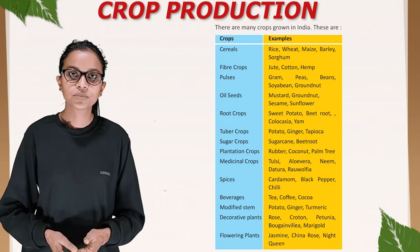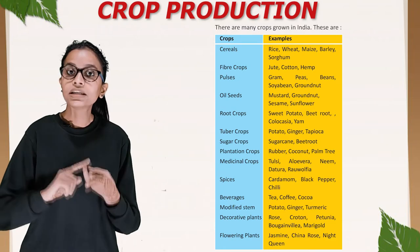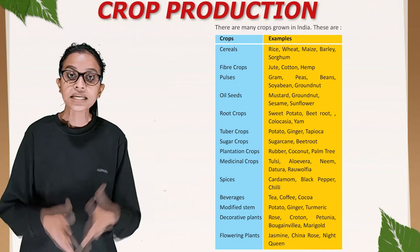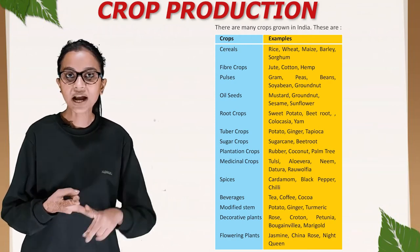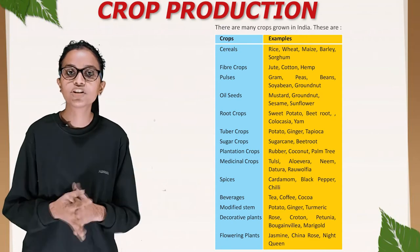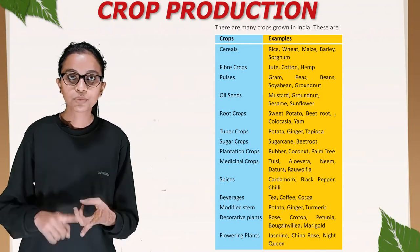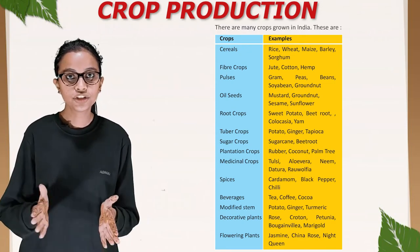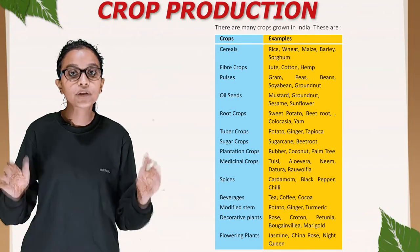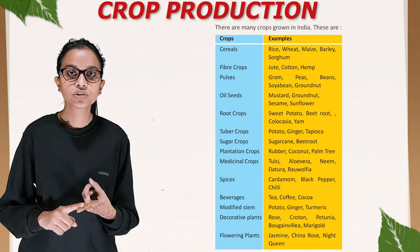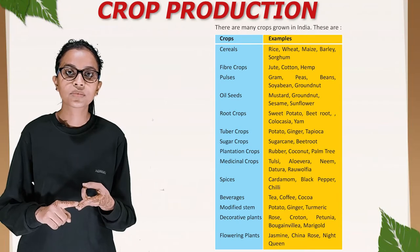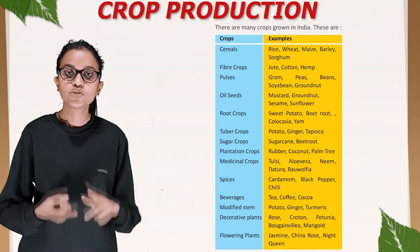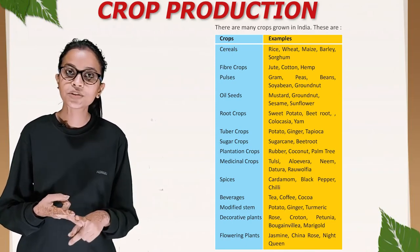Spices include cardamom, black pepper, and chili. Beverages include tea, coffee, and cocoa. Modified stem crops include potato, ginger, and turmeric. Decorative plants include rose, croton, petunia, bougainvillea, and marigold. Flowering plants include jasmine, china rose, and night queen.